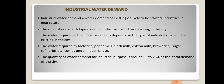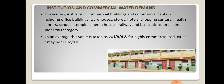Coming to institution and commercial water demand: institutions include universities, hostels, shopping centers, business establishments, temples, cinema houses, railway stations, bus stations, and other places where the public gathers. On average, 20 litres per head per day is usually accounted for institution and commercial water demand in the design of public water schemes. In highly commercialized cities, a higher value of about 50 litres per capita per day is considered for institution and commercial water demand.